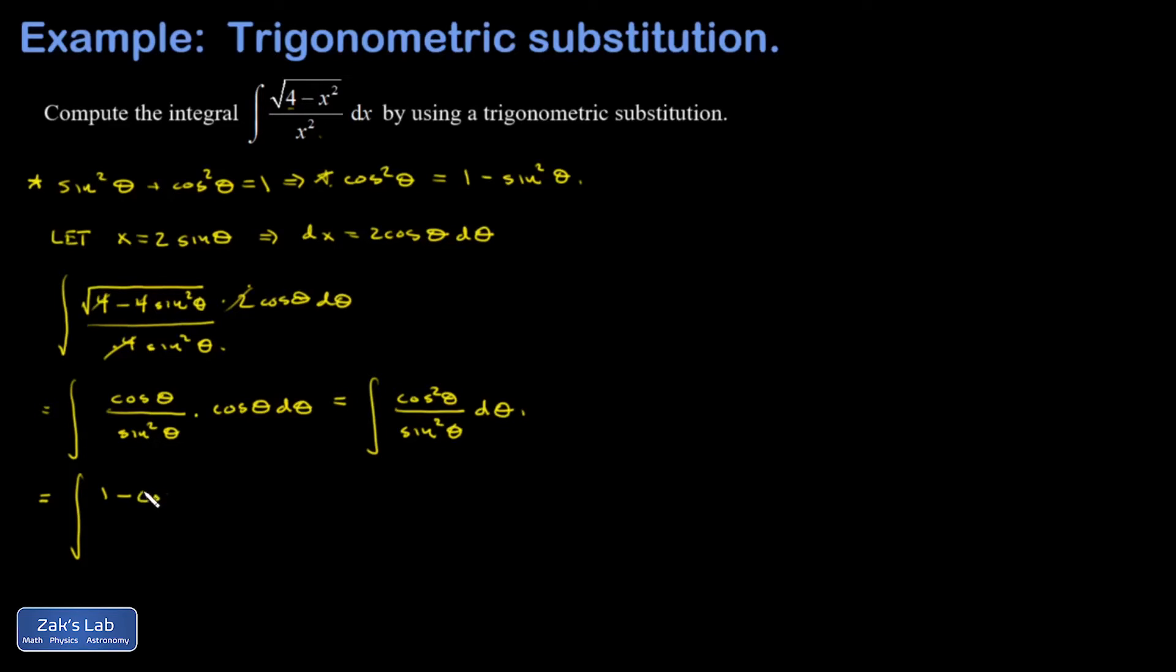Cosine squared is 1 minus sine squared. And so my first term is going to be 1 over sine squared, which is a cosecant squared. My second term is just a 1, which I certainly know how to integrate. Then I have to remember the derivative of the cotangent gives me negative cosecant squared. And so in other words, the antiderivative of this piece is going to be a negative cotangent. Antiderivative of that second piece is just a theta. So I have negative cotangent theta minus theta plus an arbitrary constant.